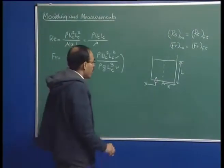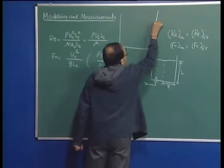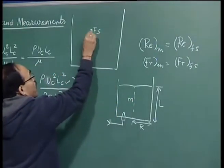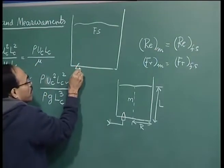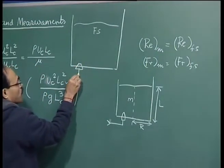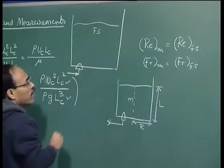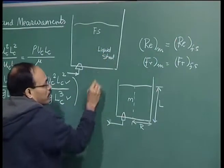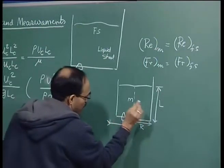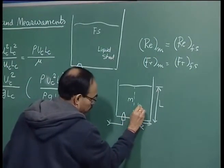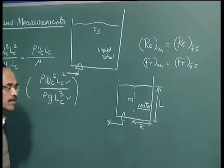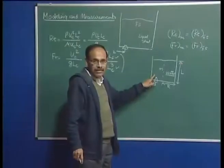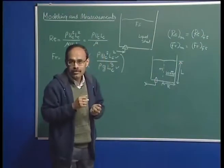Suppose the full-scale system contains molten steel with a porous plug, through which argon is injected, and this is the model system. For the time being, let us say I use water as the fluid. I want to make a transparent model because I want to visualize the flow.